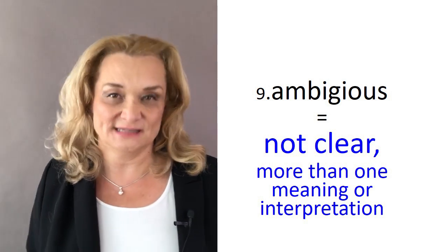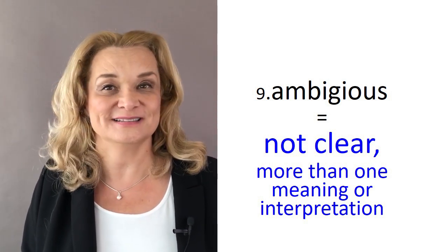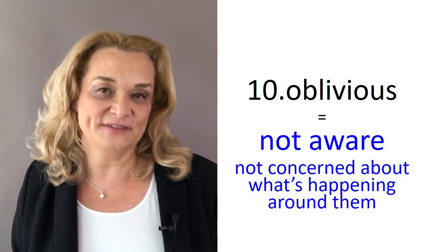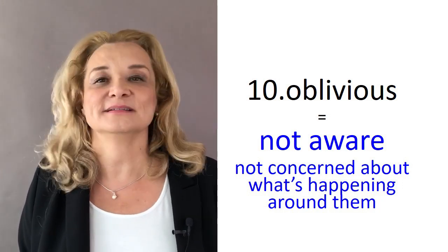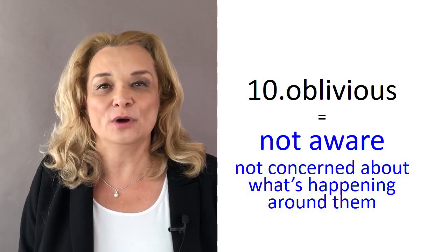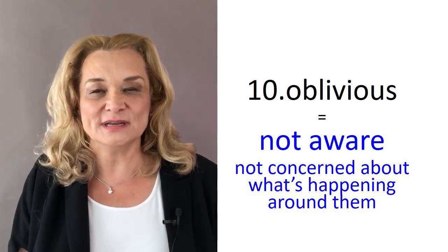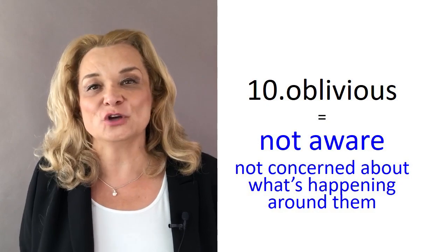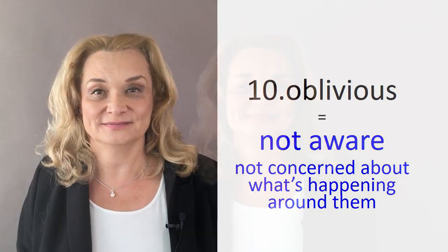There are different ways to understand something that's ambiguous. And number ten: oblivious. An oblivious person is not aware of what's going on around them — they have no awareness, they're ignorant of their surroundings. Maybe they don't pay attention or they don't care. And now let's use these words in sentences. Pay attention to which syllables I stress and which ones I reduce, which words I stress and which ones I reduce, and connecting words together is really important too.